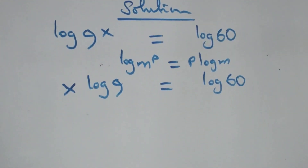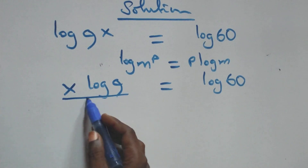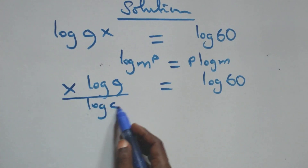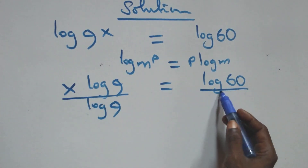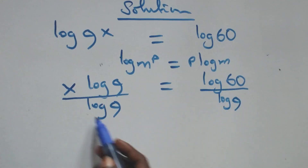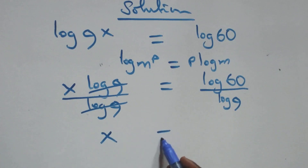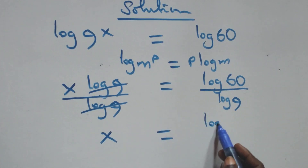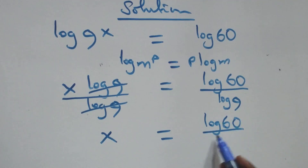We divide both sides by log 9 — divide this side by log 9, also divide this side by log 9. The log 9 terms cancel each other, and we have x equals log 60 over log 9.